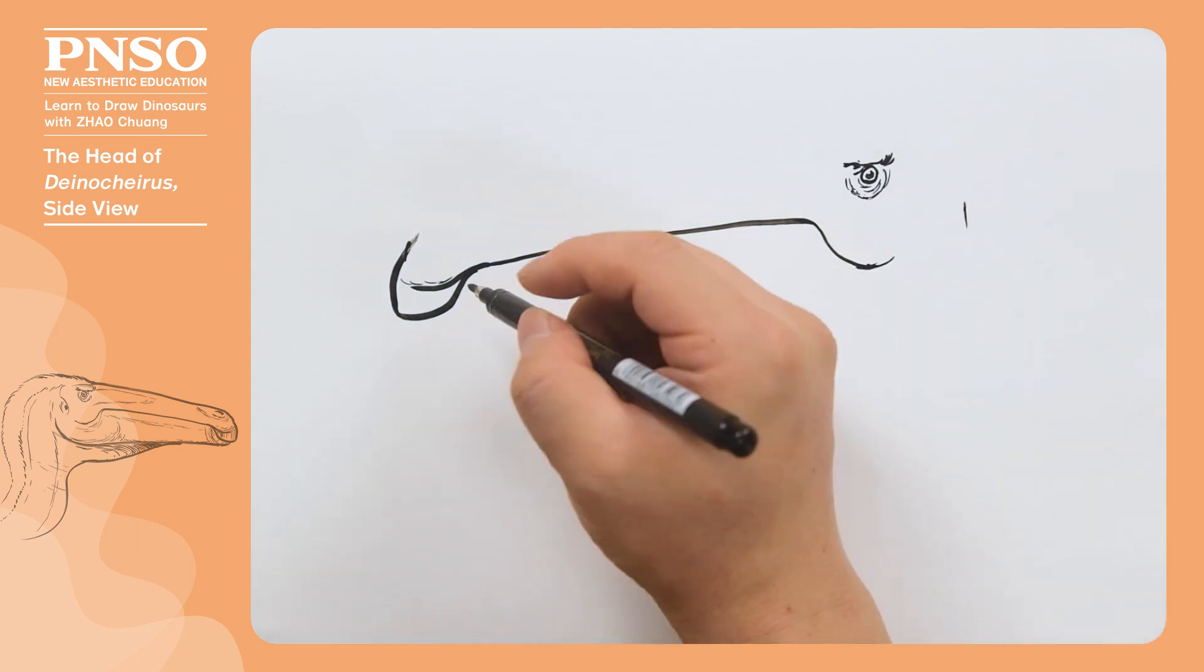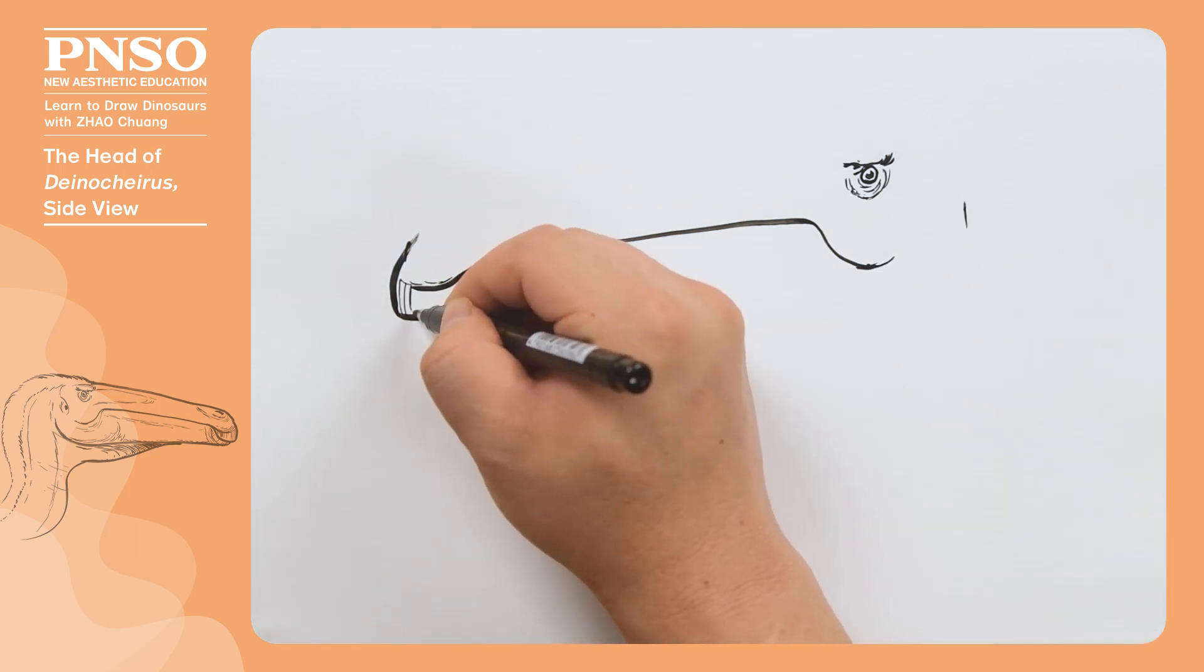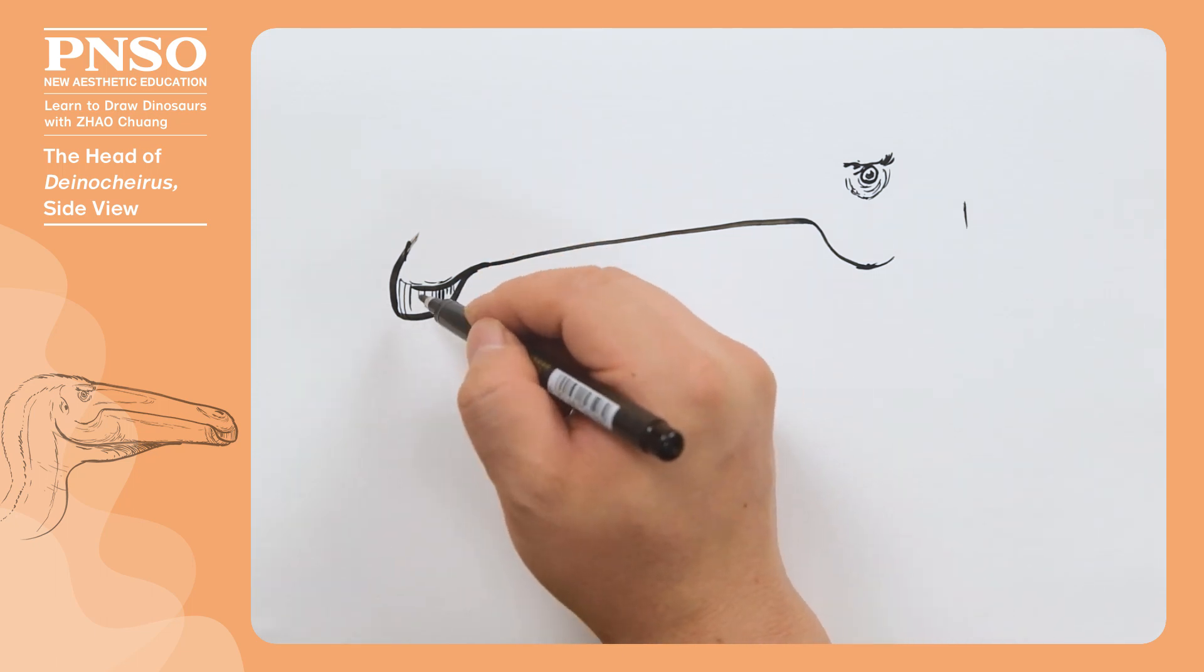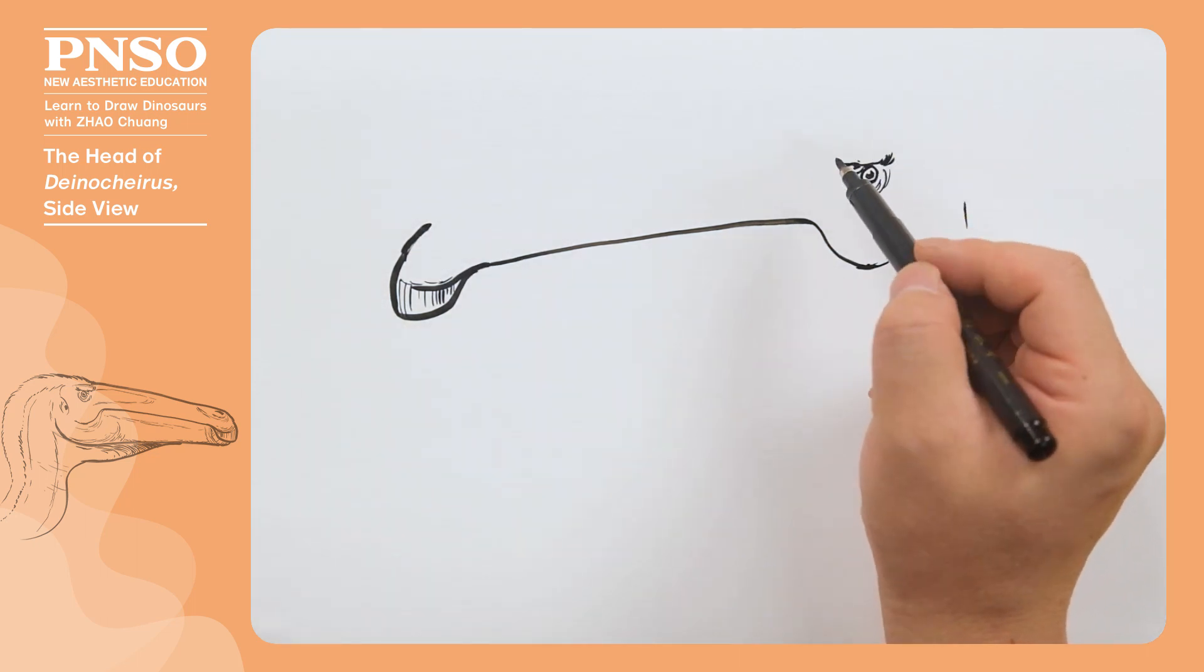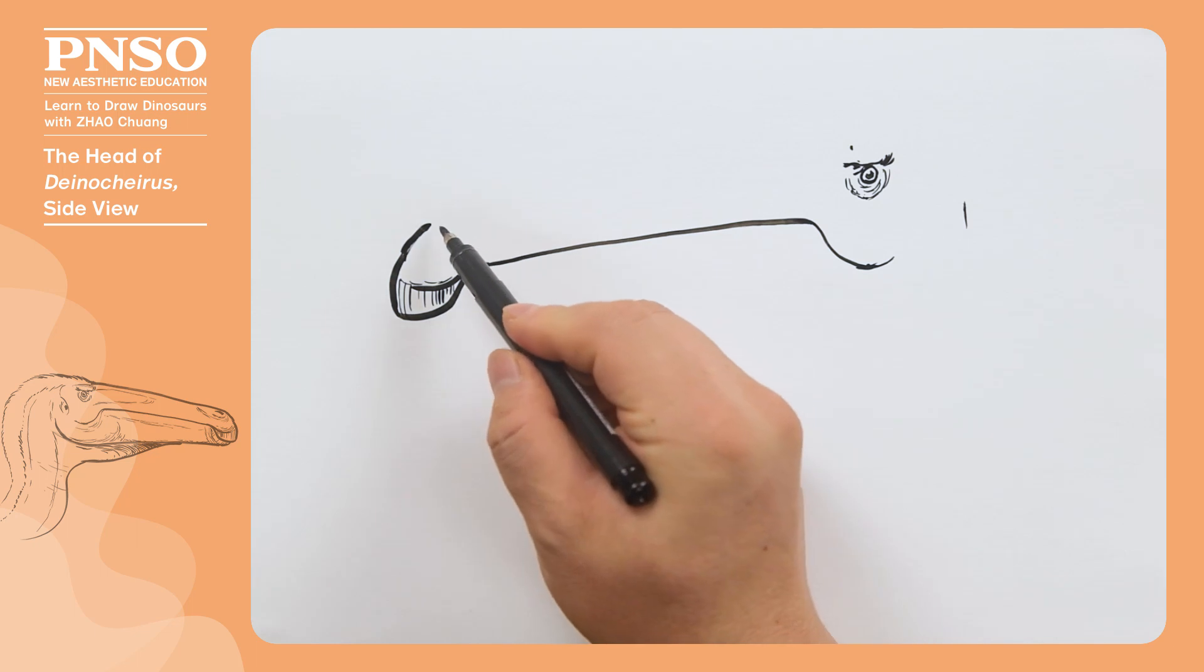Its beak was somewhat similar to that of Hadrosaurus, usually with some downward texture. Then, we draw its nose.